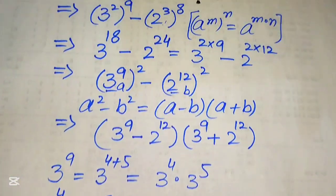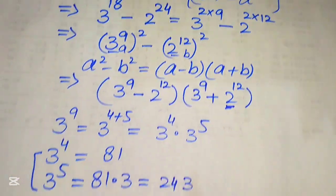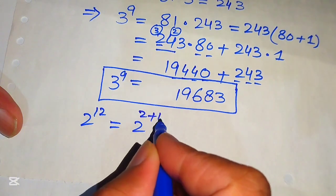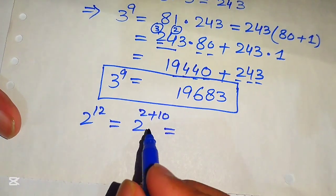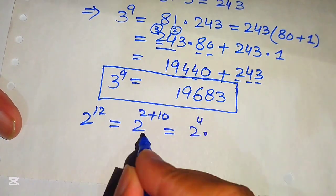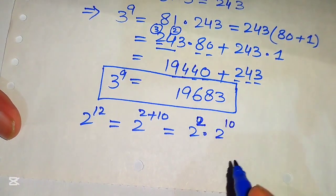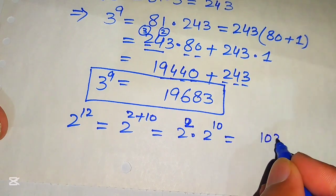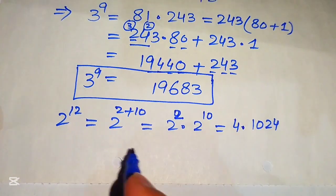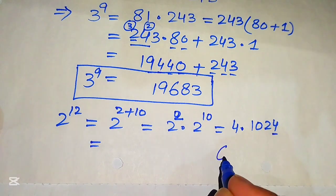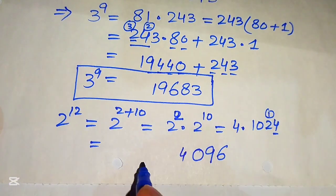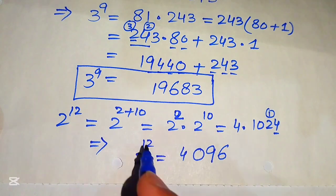Next we find 2 to the power of 12. We break 12 as 2 plus 10, writing it as 2^2 times 2^10. We know 2^10 equals 1024 and 2^2 equals 4. Multiplying 4 times 1024: 4 times 4 is 16, write 6 carry 1; 4 times 2 is 8 plus 1 is 9; 4 times 0 is 0; 4 times 1 is 4. So 2^12 equals 4096.